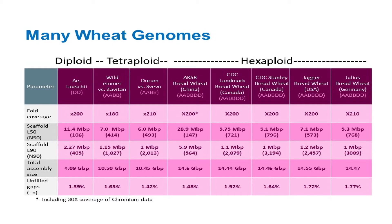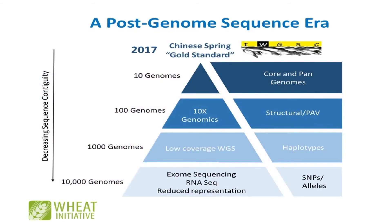We're now moving into multiple genomes, which means we can start thinking about a post-genome sequence era. Now that we have the Chinese Spring gold standard and technologies to assemble multiple genomes, we need to think about what we can do moving forward. The Wheat Initiative planned a meeting in Cambridge earlier this year, bringing together wheat genomics scientists, breeders, bioinformaticians to brainstorm about where we can go next in wheat genomics given the availability of the Chinese Spring sequence.